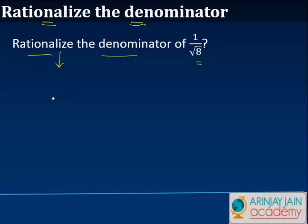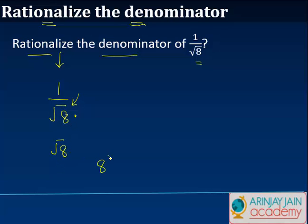So we know that if, for example, we have 1 divided by root 8, and if I want that this root should be removed, the easiest way for me is to multiply it by root 8. Because root 8 times root 8 gives me 8. So I will multiply this by root 8.